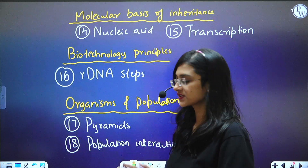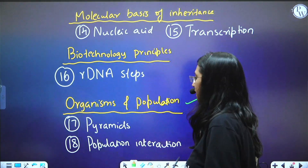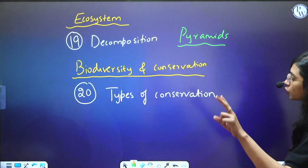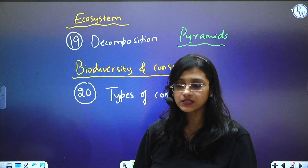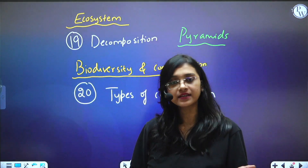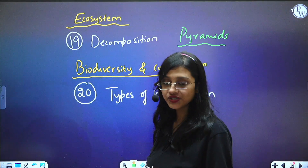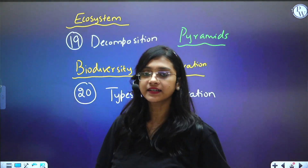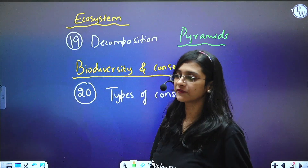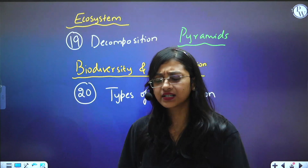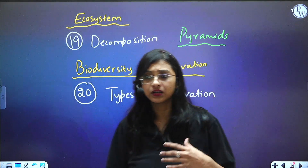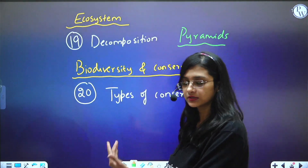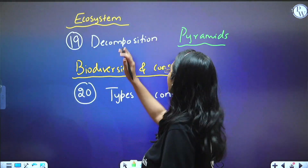From Ecosystem, from past 2-3 years, questions are coming from decomposition — the different things that come under this topic, including detritivores, catabolism, and all such concepts under decomposition in general. This is very important.